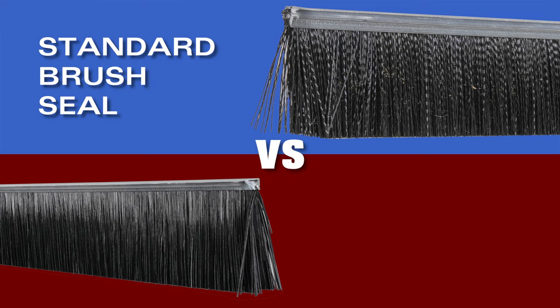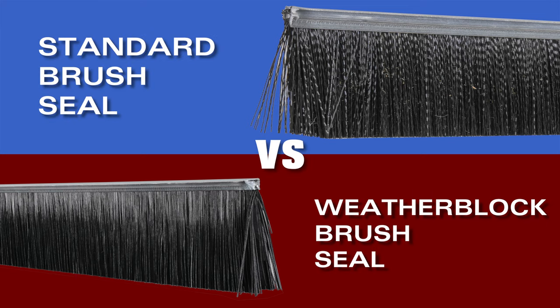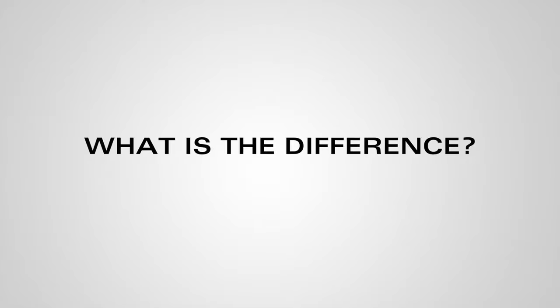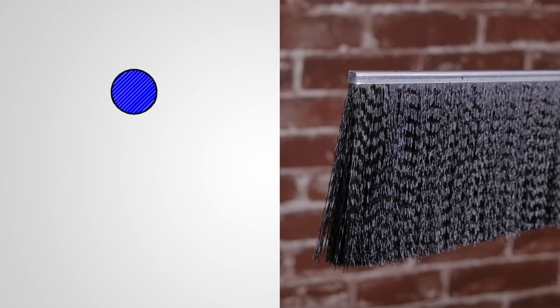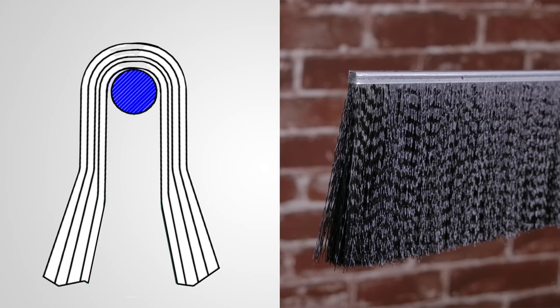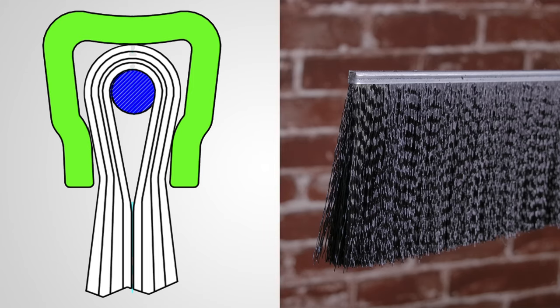Standard brush seal and weather block brush seal - what's the difference? Standard brush seal is made of durable polypropylene bristles wrapped around a steel rod and securely crimped within a galvanized steel channel. The steel rod prevents bristle pullout.